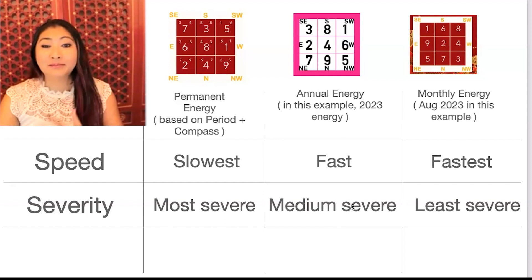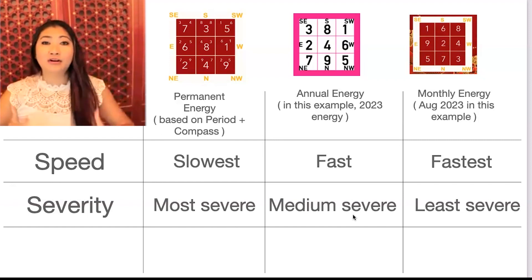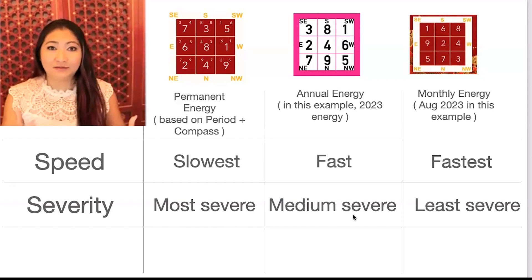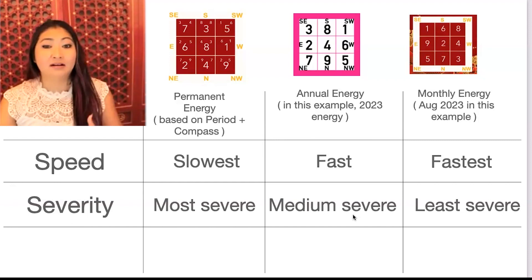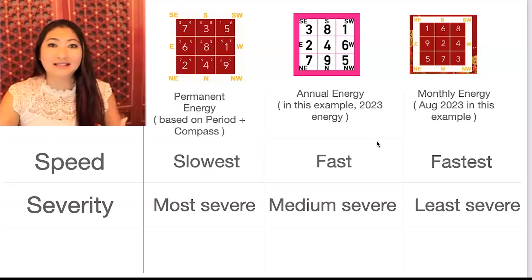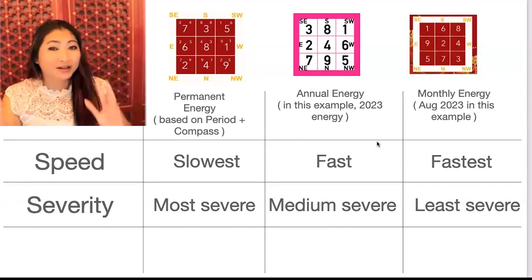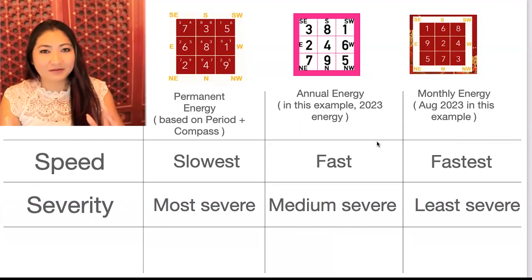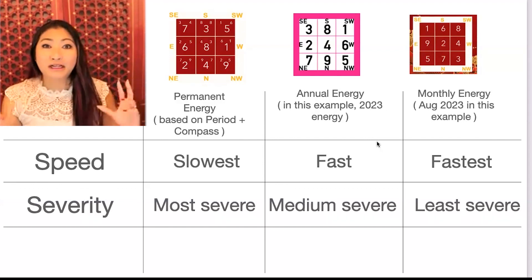The annual energy is medium severe. So if you've inadvertently been absorbing a negative energy for that certain year in a certain direction, for instance, this year 2023, the most negative energies are in the Northwest and the Northeast. If you've been using the Northwest and the Northeast area of your home because you're not aware of annual feng shui, annual flying star feng shui, then it's probably been a pretty tricky year, very stressful year for you.